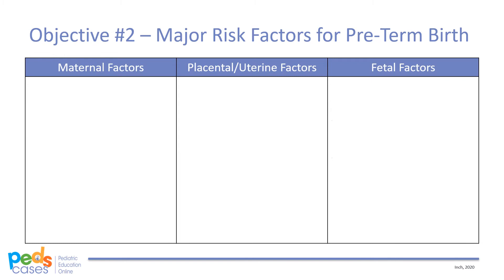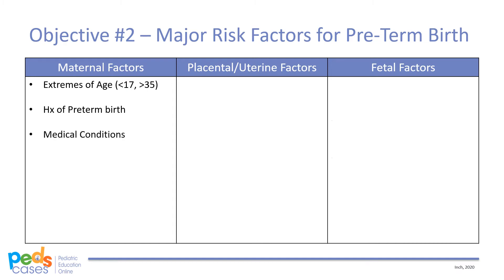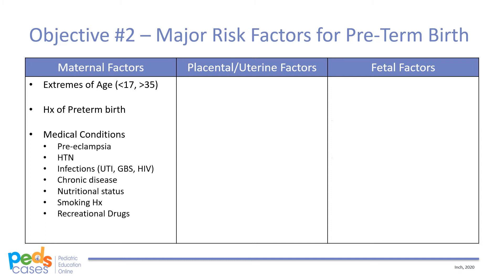The first category is maternal factors. Some examples include age, previous history of preterm birth, and medical conditions. Expecting mothers under 17 or over 35 are more likely to have preterm deliveries. Mothers who have had a preterm delivery in the past, like Brienneca, are also more likely to have a future preterm delivery, usually at the same gestational age. Medical conditions associated with preterm delivery include preeclampsia, hypertension, infections such as UTIs, GBS, and HIV, chronic diseases, nutritional status, and use of smoking and recreational drugs.